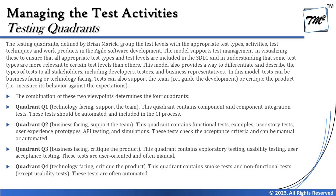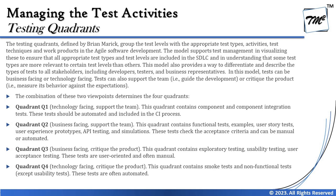Quadrant 1 is technology-facing and supports the team. It contains component and component integration tests, which should be automated and included in the CI process — this is completely technology-driven, covering unit tests, and must be as fully automated as possible. Quadrant 2 is business-facing and also supports the team. It contains functional tests, user story tests, user experience prototypes, API testing, and simulations. These tests check acceptance criteria and can be manual or automated.